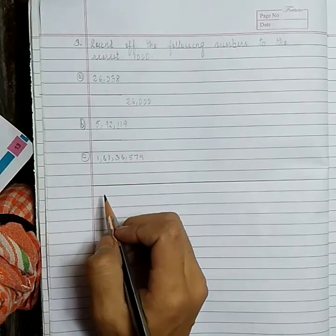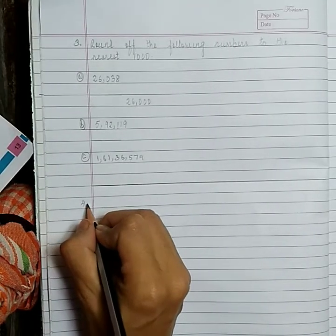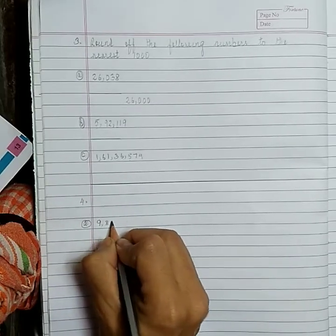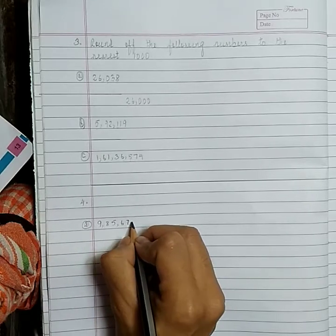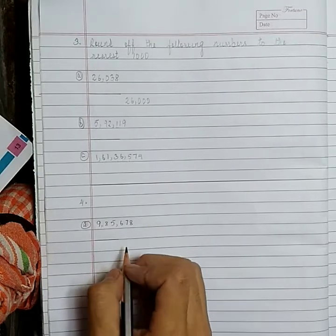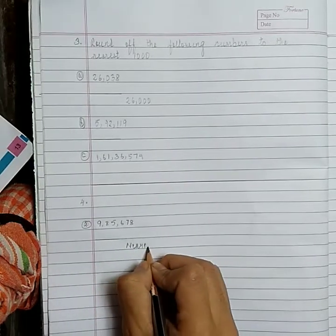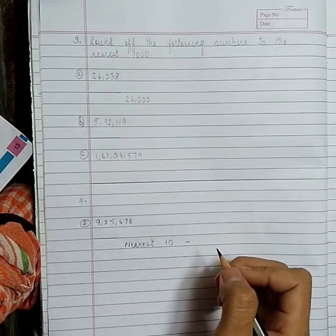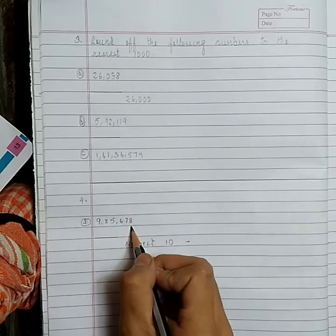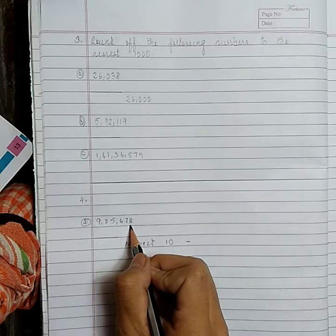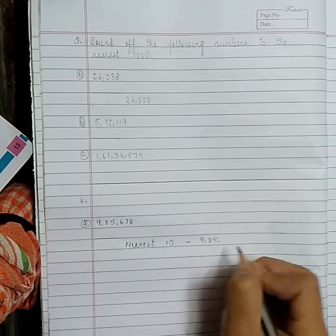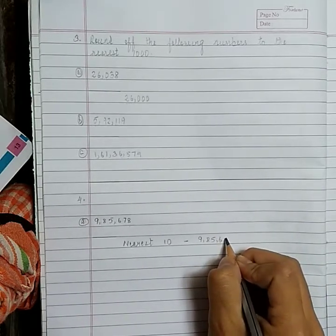After you finish question number C, draw a long line and copy down question number 4, part A: 9,85,678. To the nearest 10: we look at the 1's place. 8 is greater than 5, so we add 1 to the 10th place. The answer will be 9,85,680.